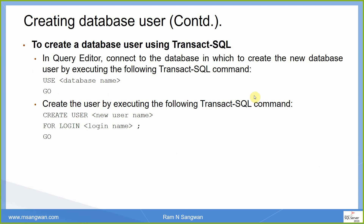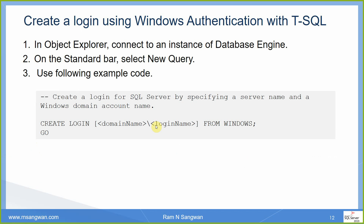To create a database user using T-SQL, use: CREATE USER username FOR LOGIN login_name. This maps a SQL Server login to a database user. For creating a login using Windows Authentication with T-SQL, the syntax is: CREATE LOGIN [domain_name\login_name] FROM WINDOWS. If it is a domain, use the domain name followed by the login name.